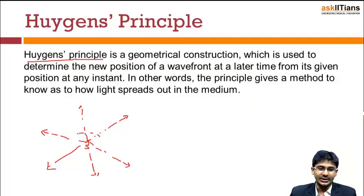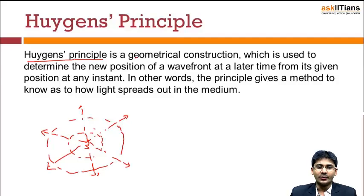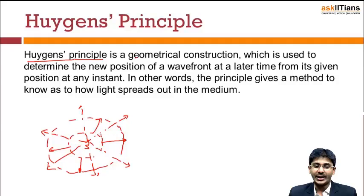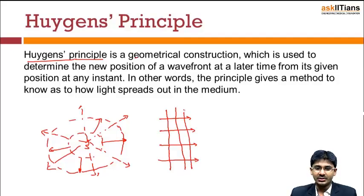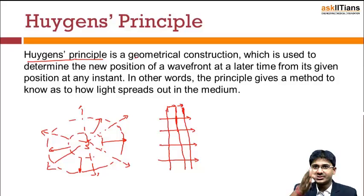Now, in terms of the wavefront, how the wavefront is moving — this is given by Huygens' Principle. We have seen how the wavefront moves; we know this is a wavefront, and at a later time this will be a wavefront for a point source. Now if you have a plane wavefront, the light rays are parallel and the wavefront will be like this — always perpendicular to the rays. These parallel wavefronts are all moving in this manner.